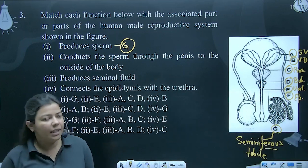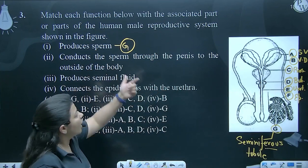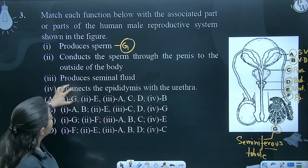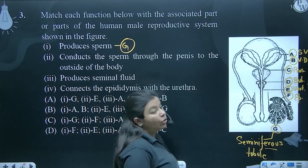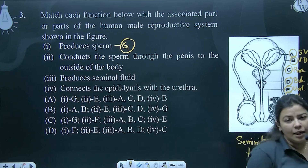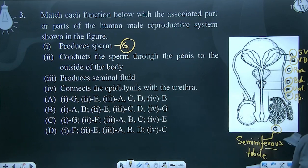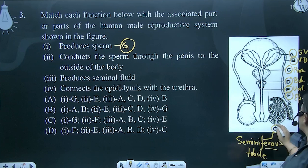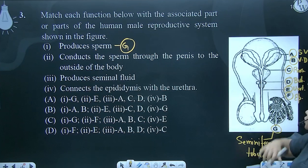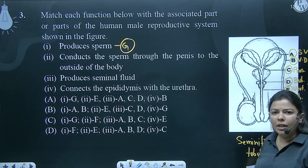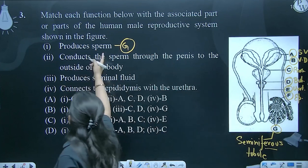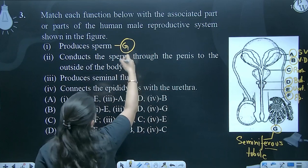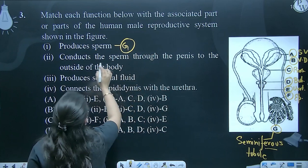Aap dhyan se dekhiye. Agar is tarike ka question aapko diya hai, to aap pehle poore points pade, uske baad diagram dekhenge. It is a little bit of hassle aur humein samajh zyada lagega. To save our time, hum log kya karenge ki A, B, C, D, E, F, G — jo bhi labeling diya hai, aap usko fata-fat label kar lijiega. Label karenge to jaisa jaisa usne pehla function diya — produce sperm kaun karega — G, seminiferous tubule produce sperm karega.